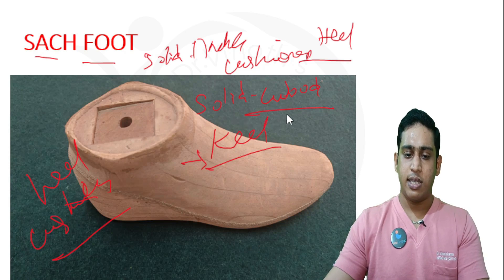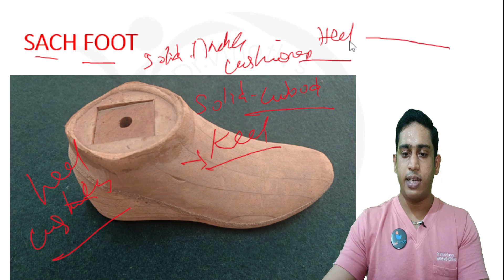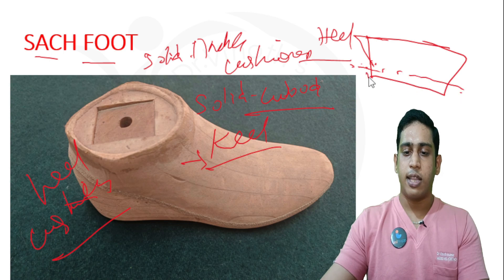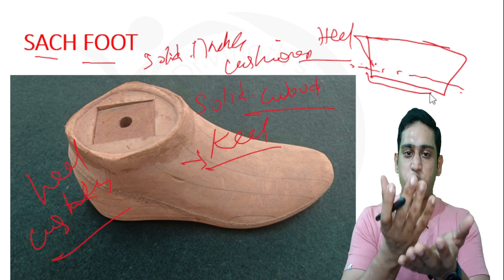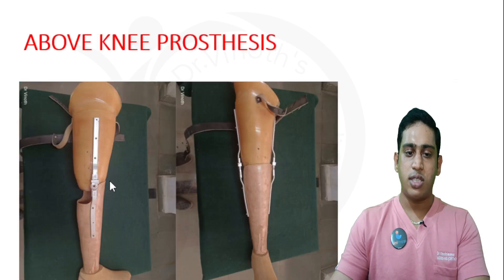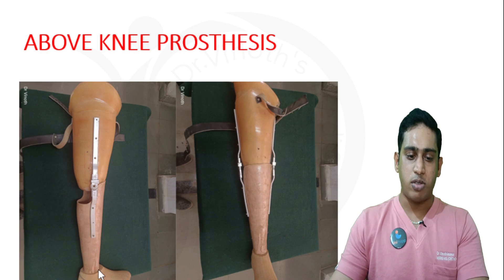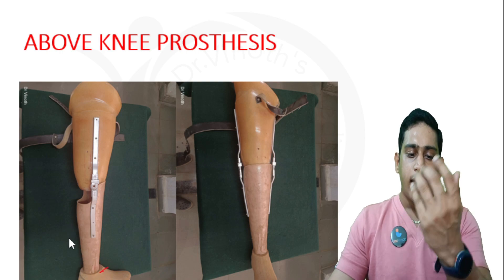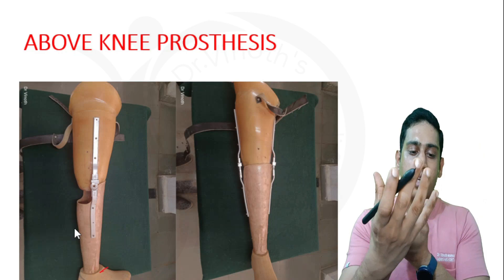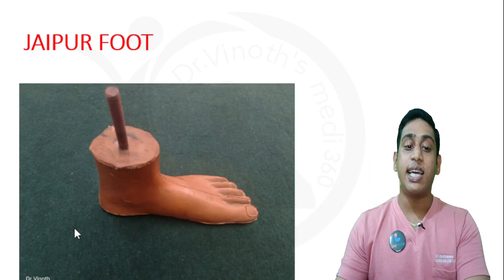What is meant by a keel? We all know a ship — the part of the ship that is submerged in water is called the keel, which makes the ship float. Similarly, in a prosthesis — in this exoskeletal prosthesis — the shank part gets attached to the SAC foot. This part takes the entire prosthesis into the proximal part of the SAC foot. That is why it is called the keel of the foot. This keel is made up of a solid structure, that is wood — hence the name SAC foot.